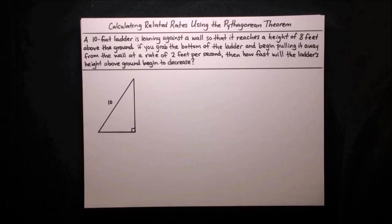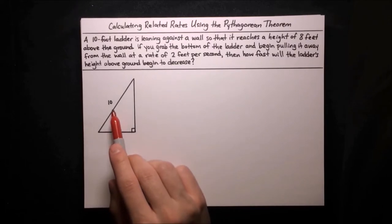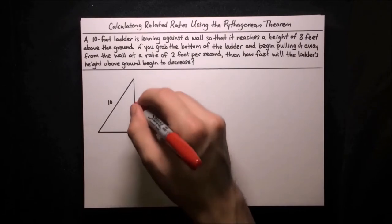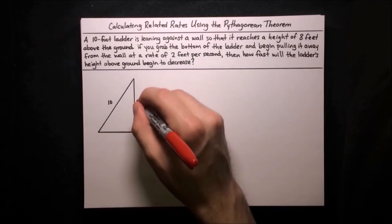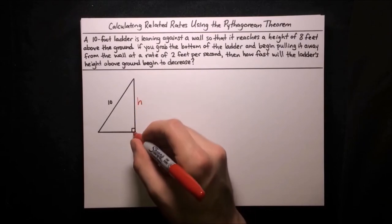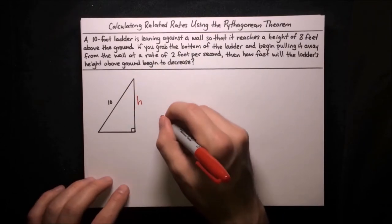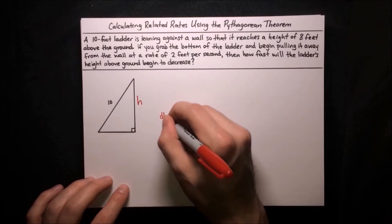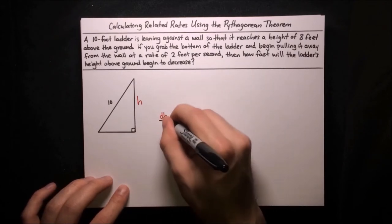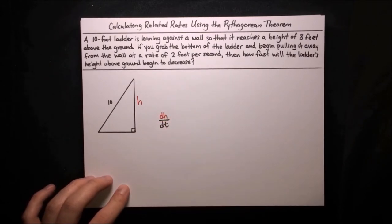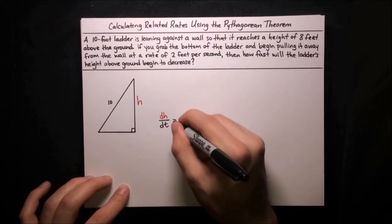We've got a diagram here — it's really just a triangle. The ladder is the hypotenuse, 10 feet long. Let's label the ladder's height above the ground with h — that's just the vertical distance from the ground to the top of the ladder. What we're trying to find is dh/dt, the rate of change of the ladder's height above ground.